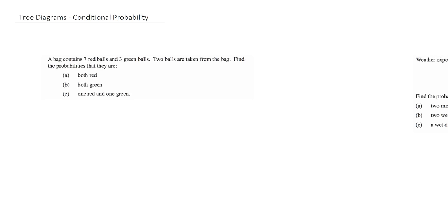In this video we're going to look again at tree diagrams, but this time consider what happens when things change after a certain event, and that's known as conditional probability.